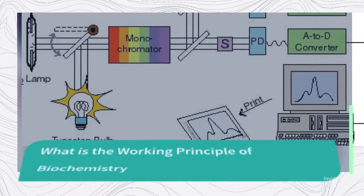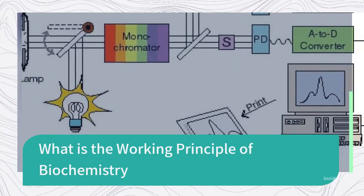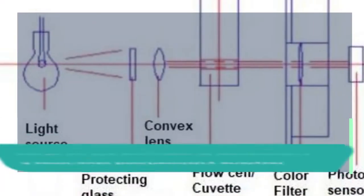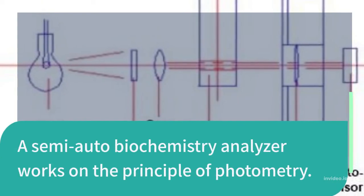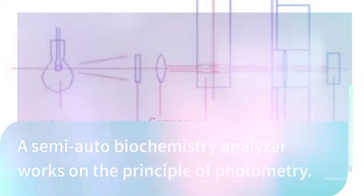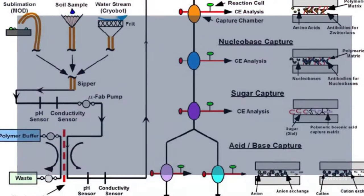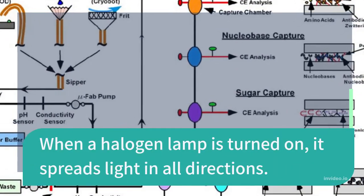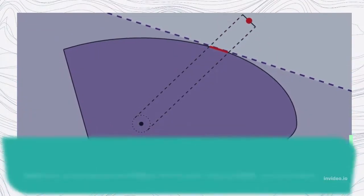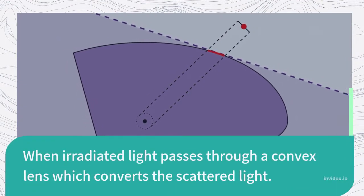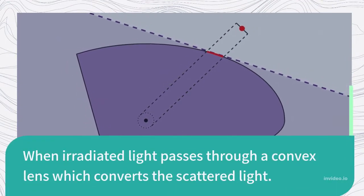A semi-auto biochemistry analyzer works on the principle of photometry. When a halogen lamp is turned on, it spreads light in all directions. When irradiated light passes through a convex lens, it converts the scattered light.